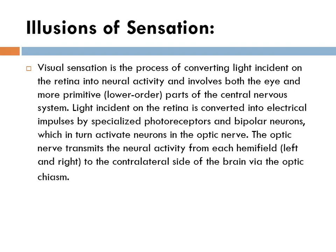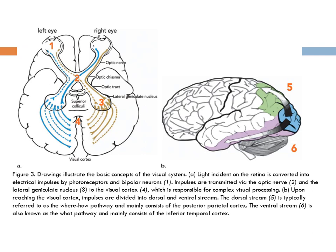In illusions of sensation, when light stimulates the photoreceptors in the retina it is converted into neural activity, then transmitted via the optic nerve to the contralateral side of the brain. There it stimulates the lateral geniculate nucleus, and from there it goes to the visual cortex in the occipital lobe. From the visual cortex it goes either into the inferior temporal or the dorsal parietal area. Pathway five gives information about where and how — the location — while pathway six gives information about what it is: its shape, color, and related features.